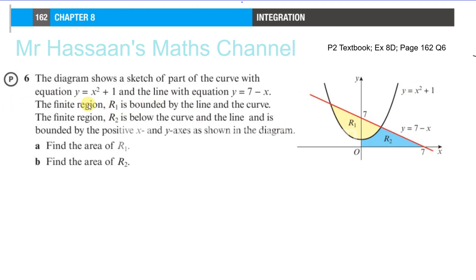The finite region R1 is bounded by the line and the curve. The finite region R2 is below the curve and the line, and is bounded by the positive x and y axes as shown. We've got to find the area of R1 first, and then the area of R2.